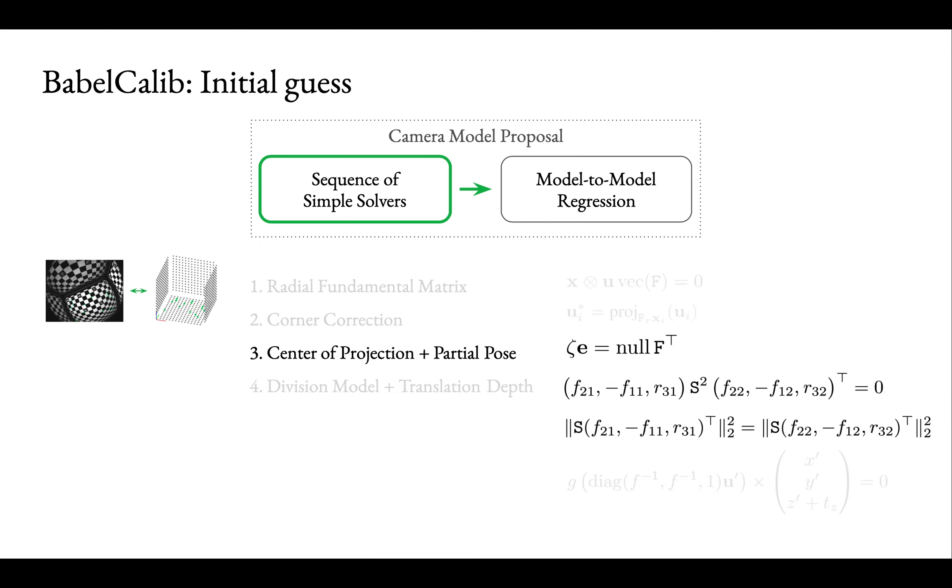The image center is often used as an initial guess for the center of projection. However, its displacement will bias the estimate of the back projection model. We recover the center of projection from the null space of the refined fundamental matrix. We solve a quadratic system of equations to recover the camera pose parameters from the first two rows of the radial fundamental matrix. Translation depth cannot be recovered from the radial constraints alone, so it is recovered next with the camera intrinsics.